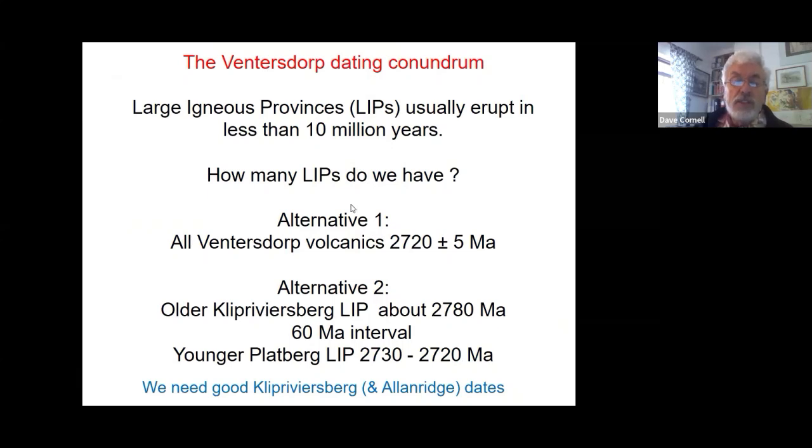So the conundrum about the Fentersdorp large igneous province: they usually only last about 10 million years. How many large igneous provinces are there in the Fentersdorp? The first alternative is there's only one, which would mean almost all the Fentersdorp volcanics should be around this age. The second alternative is there might be two. If the Klepper Fiersberg is that old, 2780, then there would be a 60 million year interval before you got to the younger large igneous province in which the Makwasi and Khutgunug are in. So we need better dates on the Klepper Fiersberg and the Allen Ridge at the top. The trouble is there's not much zircon in them.